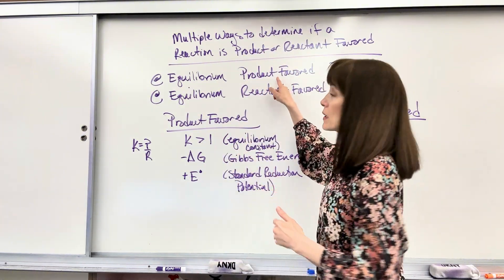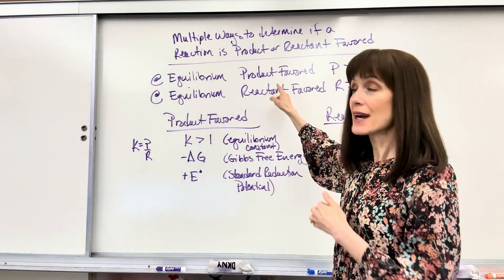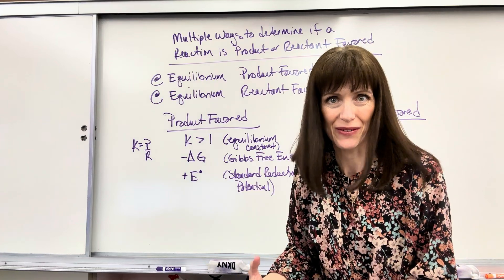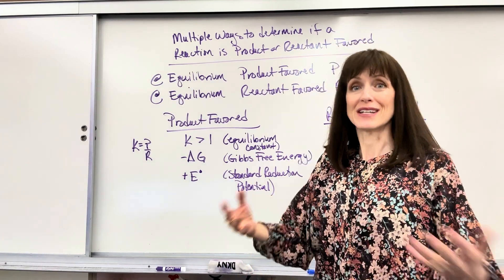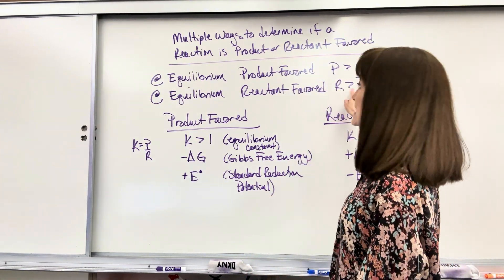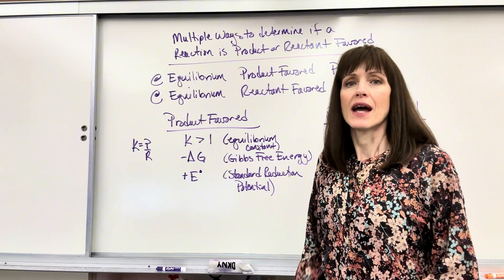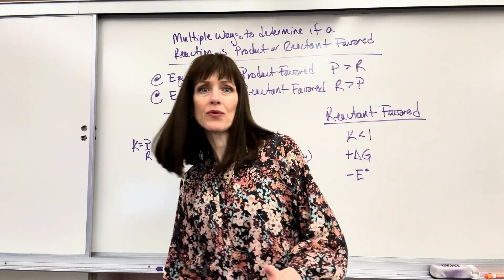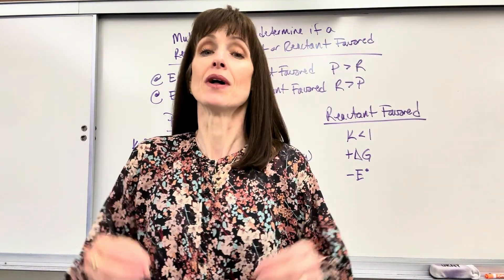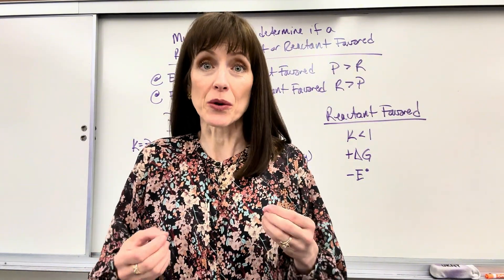At equilibrium, if you have more products than reactants — products are greater than reactants — it's product favored. And vice versa, if you have more reactants than products, that is reactant favored. At equilibrium, remember, that doesn't mean equal amounts; it means equal rates.